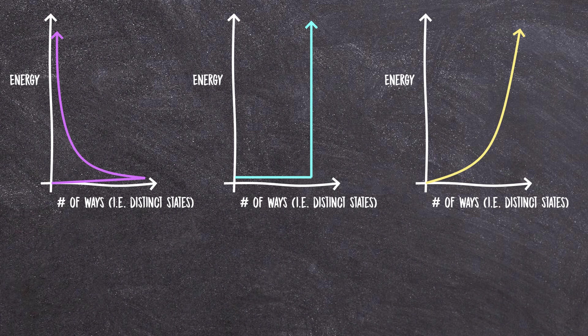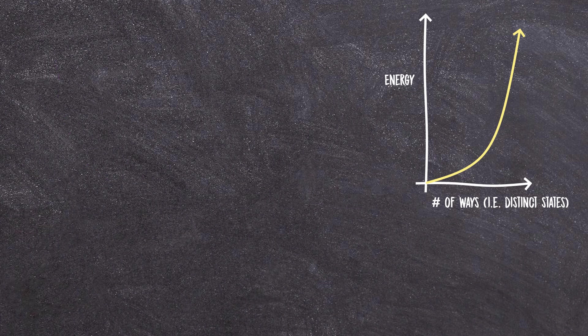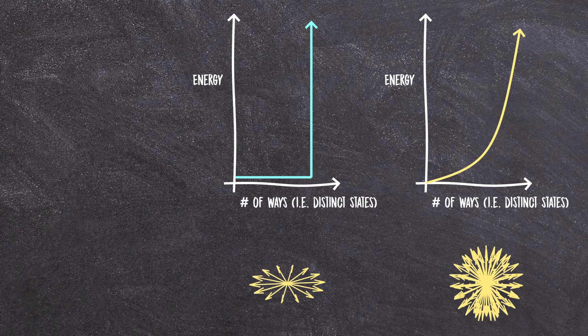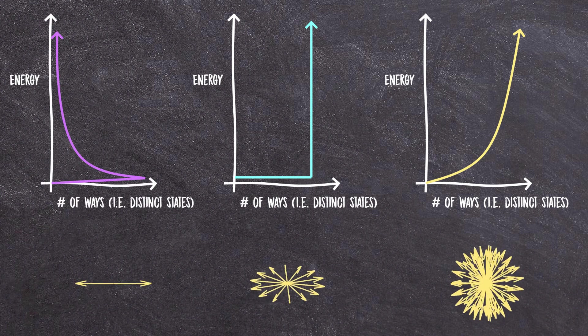So these are our dimensional indicators. When we look at the system and look at its density of states, if it looks like this, things are behaving as if they're in a three-dimensional world. But if we see this shape, that means the laws of physics are actually playing out in a two-dimensional world. And this shape is a one-dimensional world.